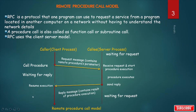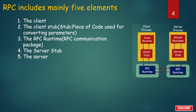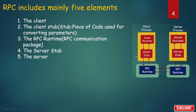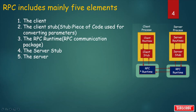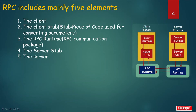This is the Remote Procedure Call model. RPC includes mainly five elements: the client, that is client routines; the client stub — a stub is a piece of code used for converting parameters; then the RPC runtime, which is the RPC communication package; then the server stub; and finally the server routines.